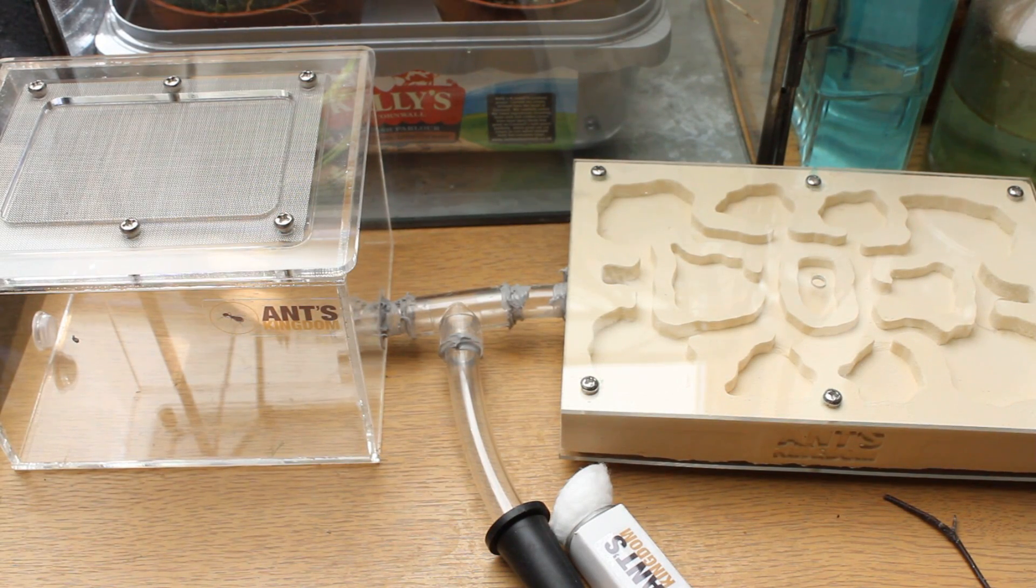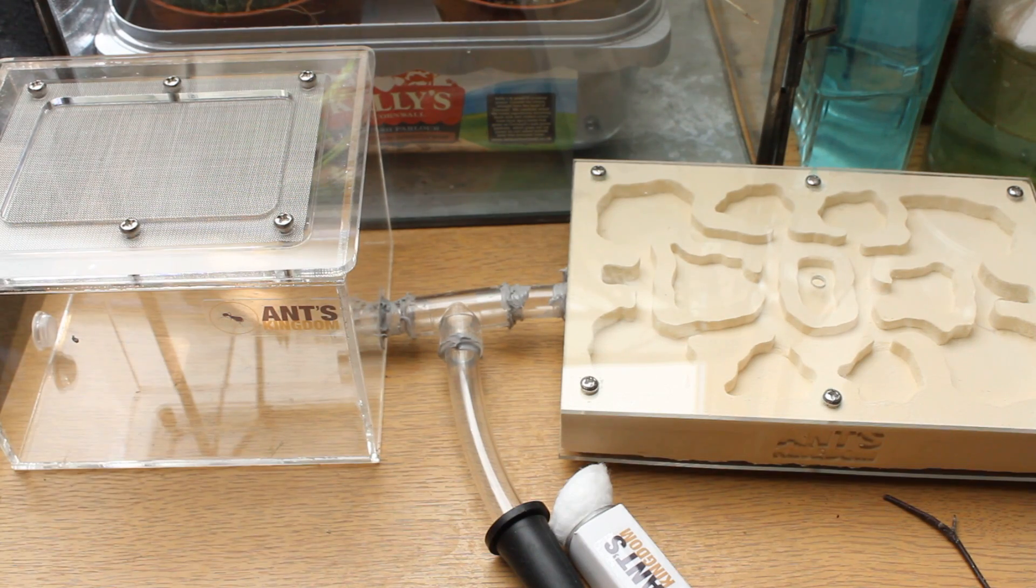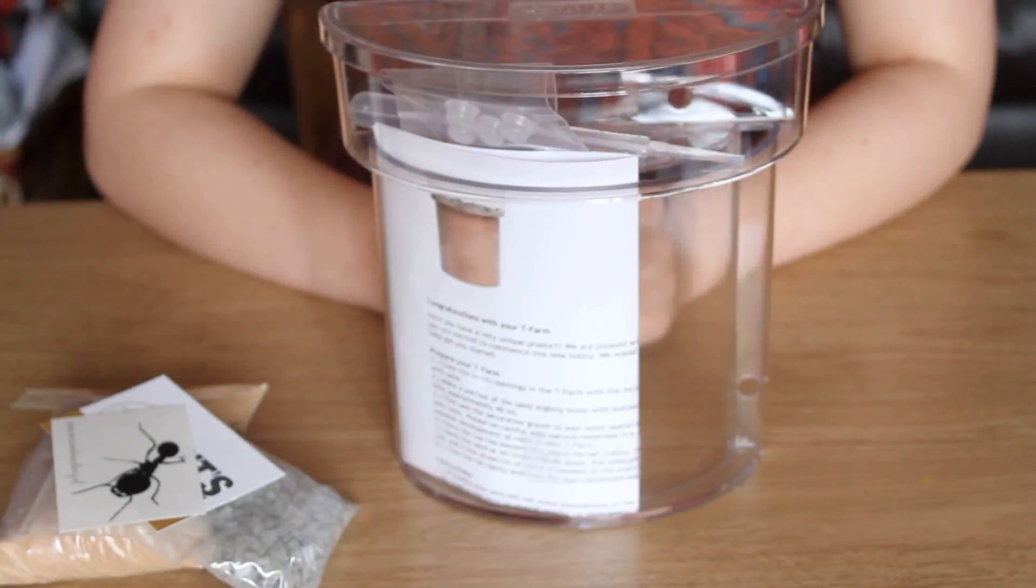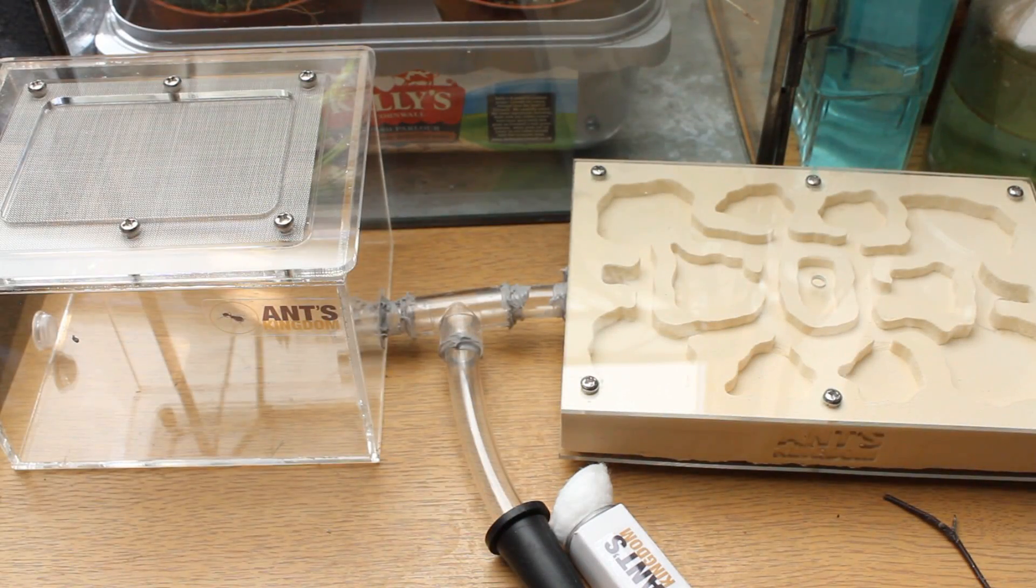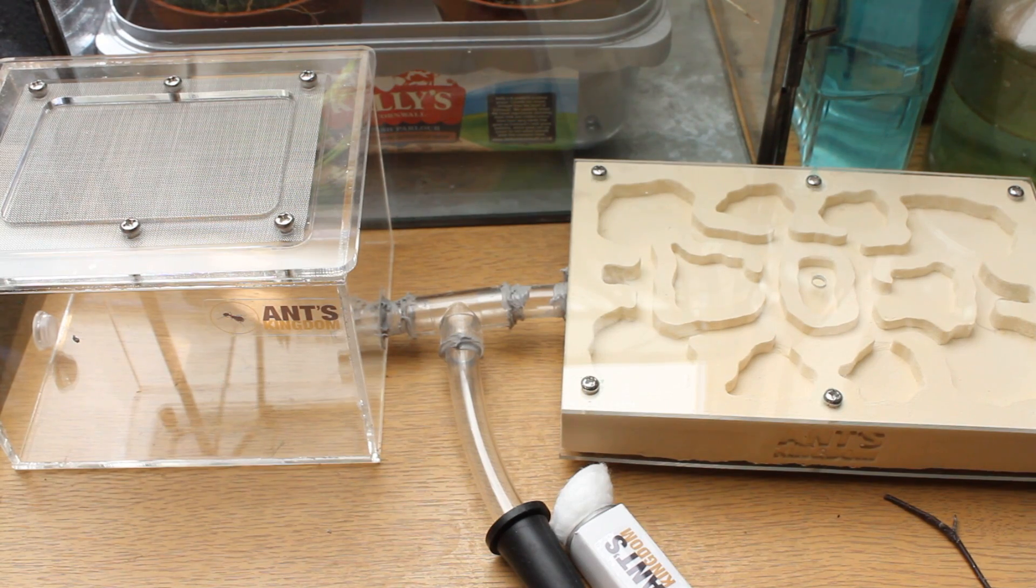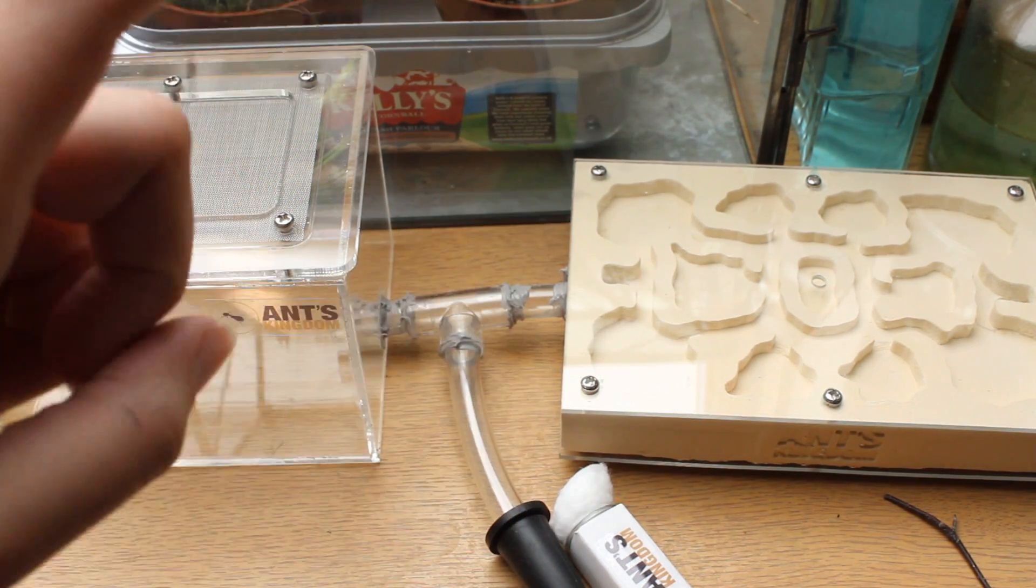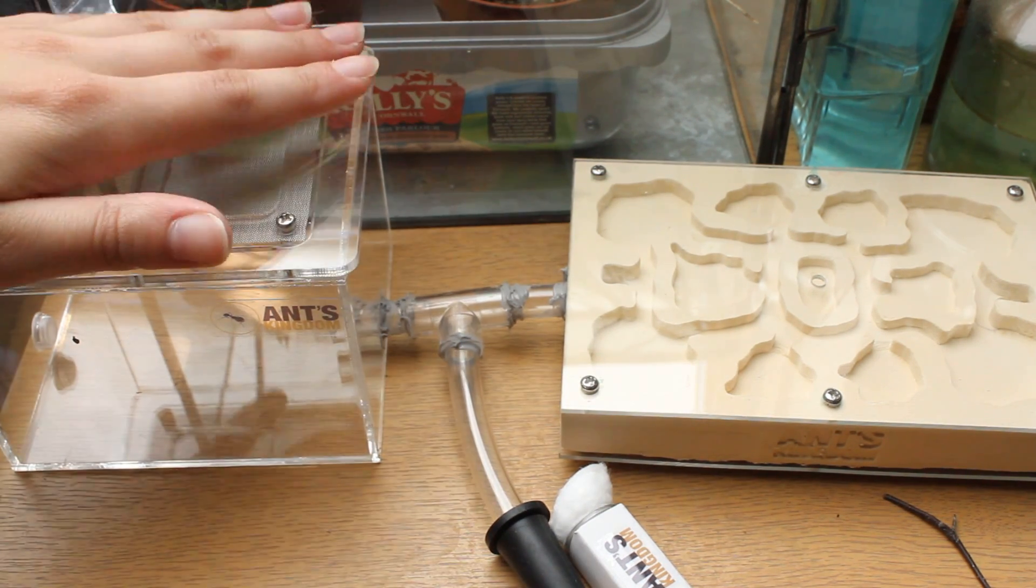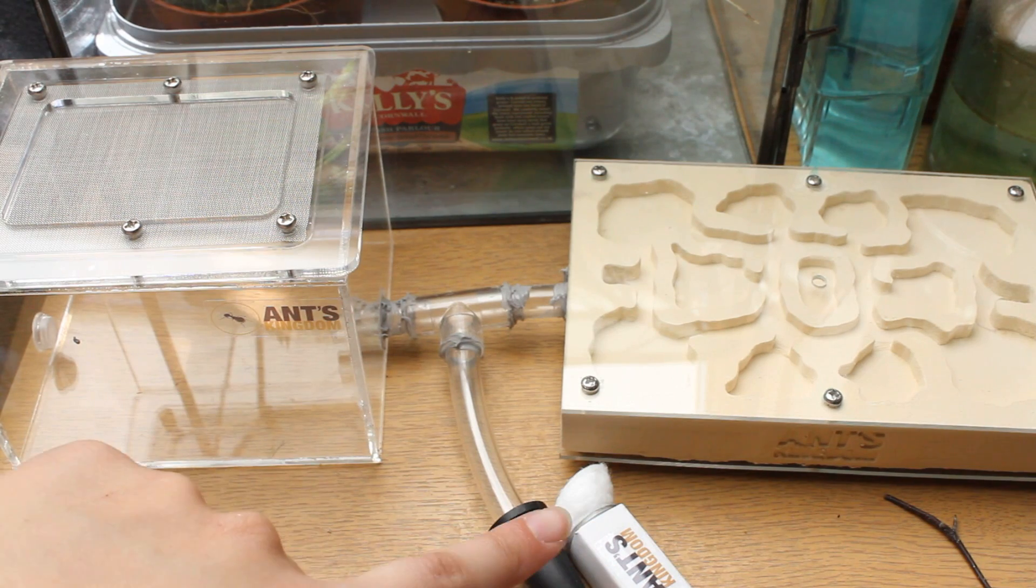Hi guys and welcome to a very special video. So basically Ants Kingdom, remember I completely butchered their name in Dutch. Mieren Bordecai. Yeah, well they very nicely sent me out harvester ants and a brand new nest. I believe it's called a gypsum nest I think and an arena where I can put the food in and obviously they're in a test tube here.